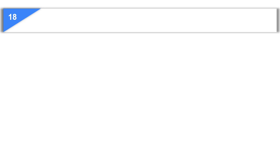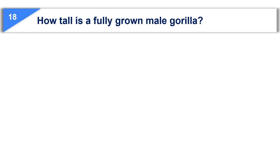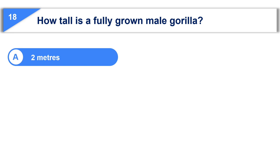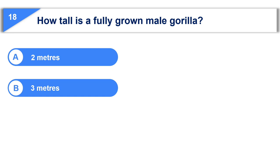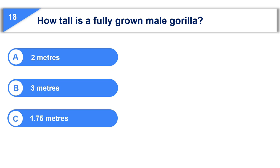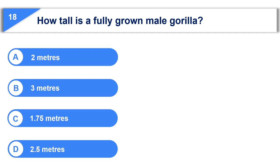Now let us see the 18th question. How tall is a fully grown male gorilla? Option A, 2 meters. Option B, 3 meters. Option C, 1.75 meters. Option D, 2.5 meters.